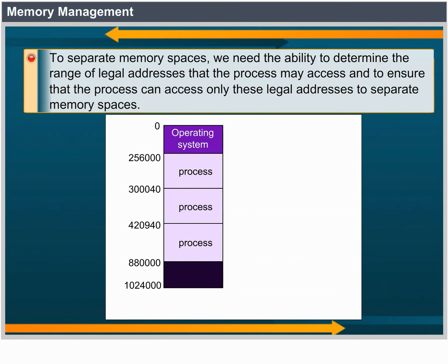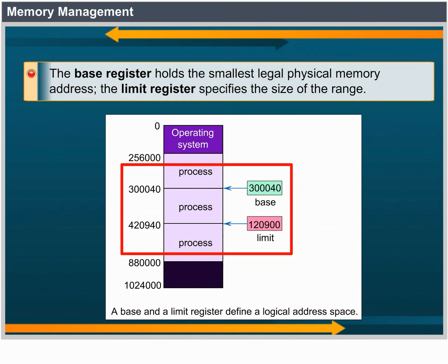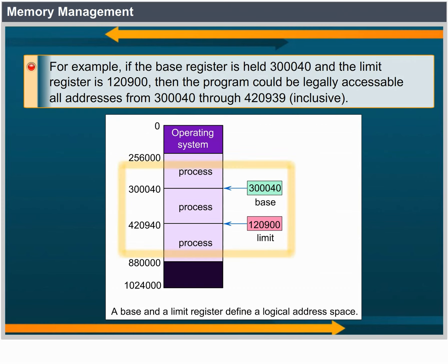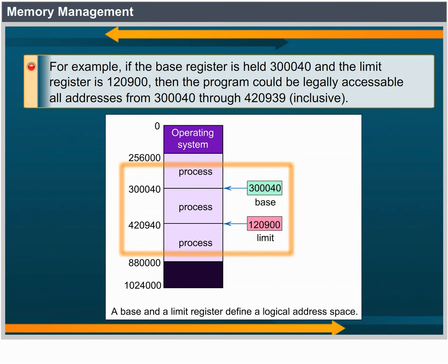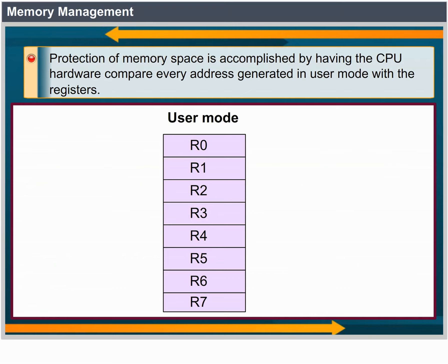To separate memory spaces, we need the ability to determine the range of legal addresses that the process may access and to ensure that the process can access only these legal addresses. We can provide this protection by using two registers, usually a base and a limit. The base register holds the smallest legal physical memory address. The limit register specifies the size of the range. For example, if the base register holds 300040 and the limit register is 120900, then the program can legally access all addresses from 300040 through 420939 inclusive.